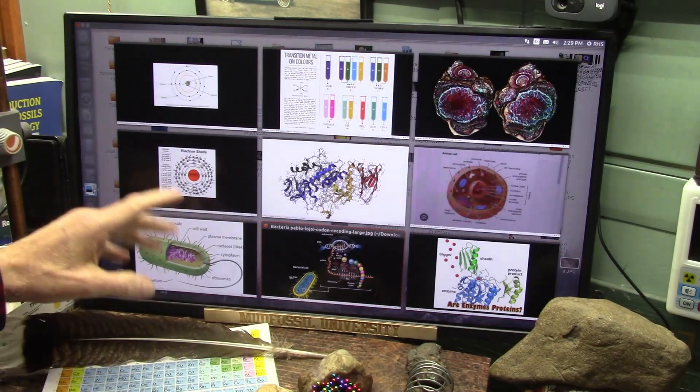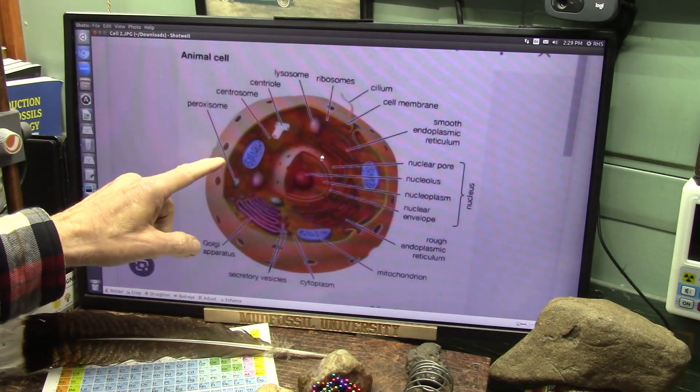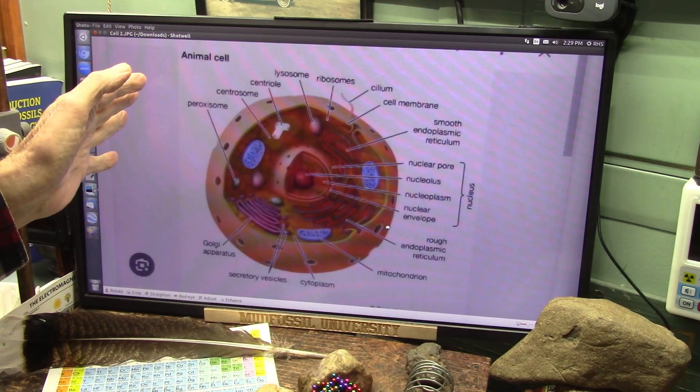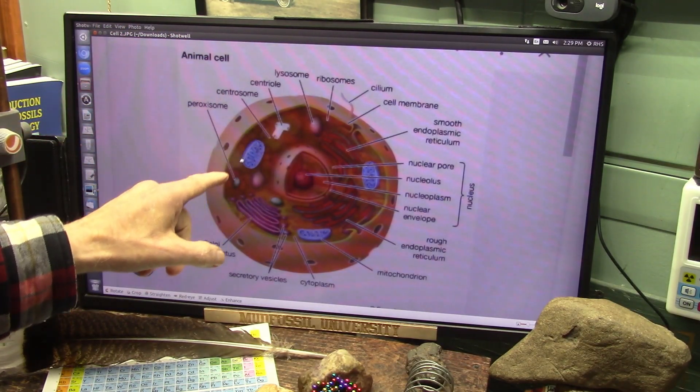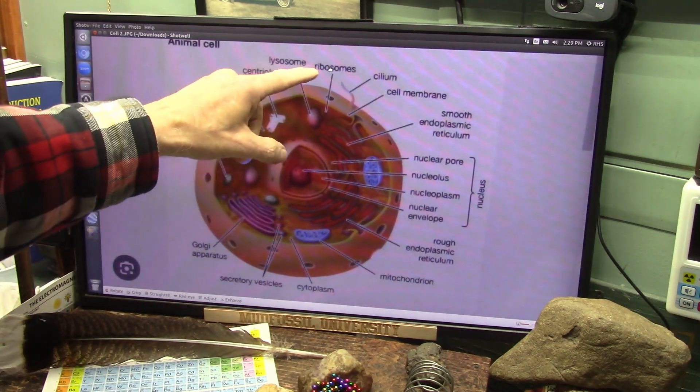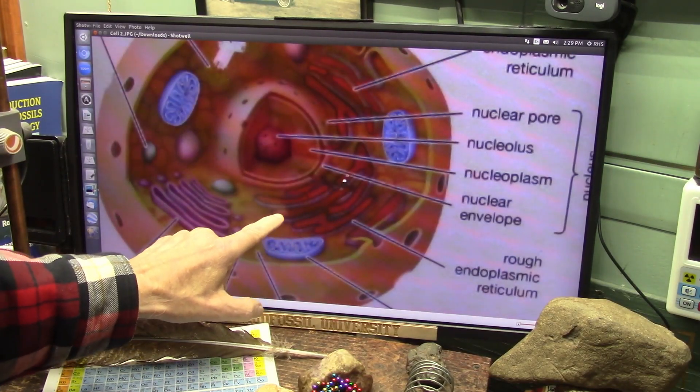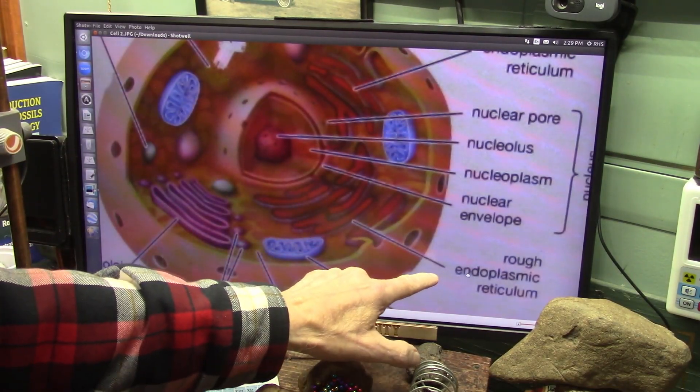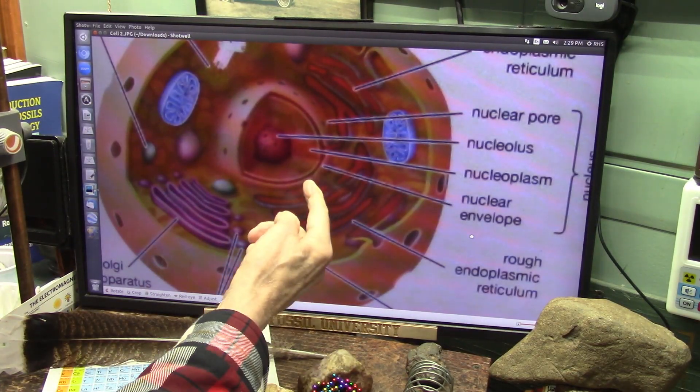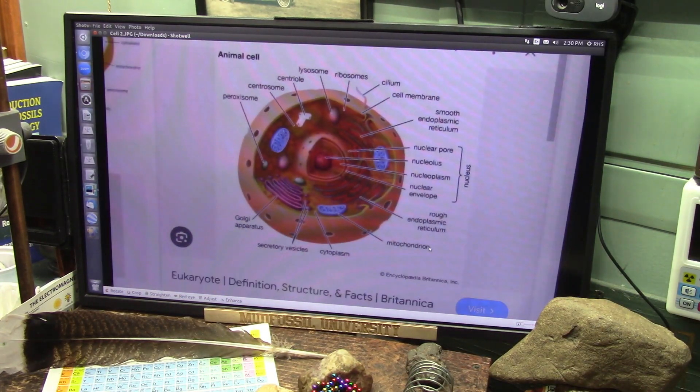These little ribosomes are so small. Inside of every animal cell, every cell in our body which we have trillions, there's millions of those little ribosomes just in here floating around. They do collect on this thing right here, the rough endoplasmic reticulum, which looks like some kind of labyrinth to get into the nucleolus where most of your DNA is stored.